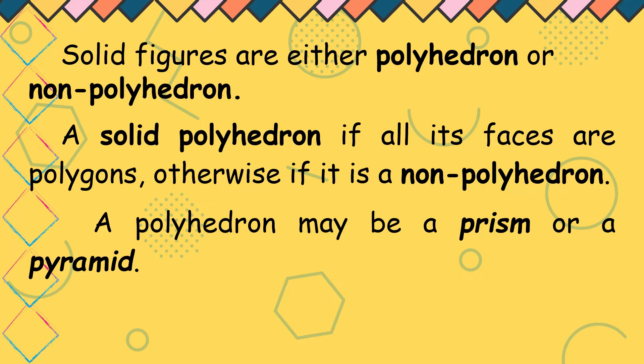A solid polyhedron if all its faces are polygons. Otherwise, it is a non-polyhedron. A polyhedron may be prism or pyramid. Pag sinabi natin polyhedron ang mga faces ay polygon. Mula sa triangle hanggang dodecagon ang faces nito. Maaari natin masabi na ito ay prism or pyramid.